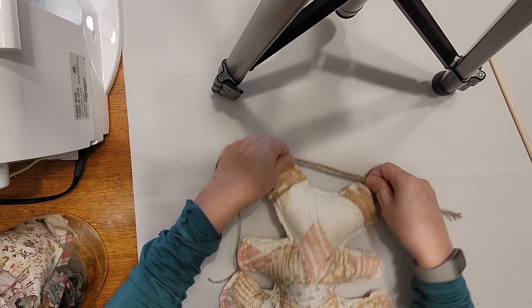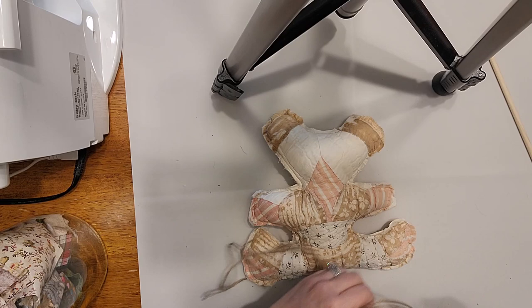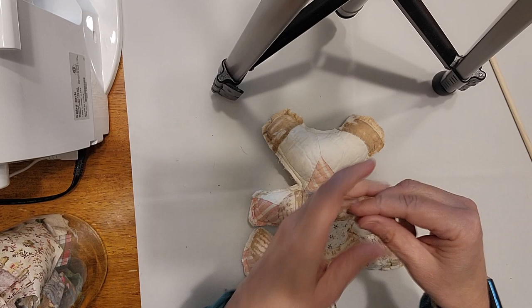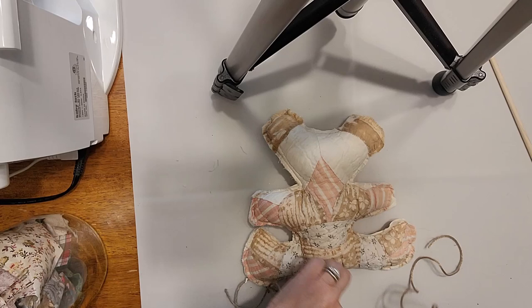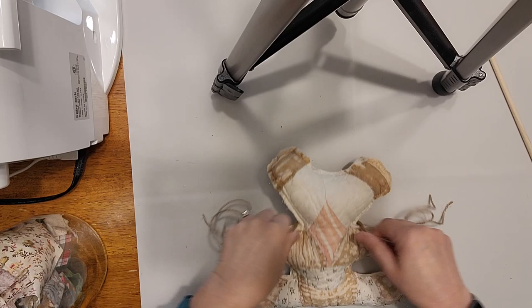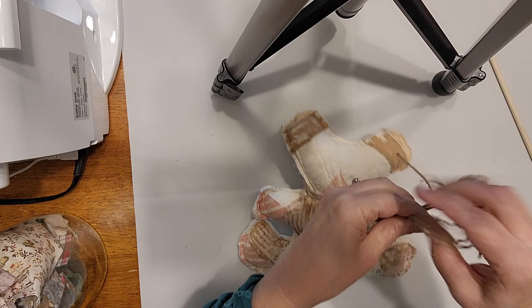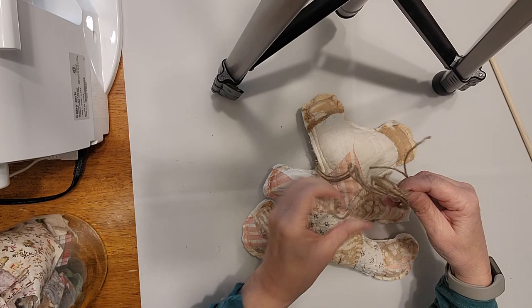Okay so I've cut three sections of twine that I happen to have, about 24 inches long for this little guy, and then we're just going to tie a simple knot around this little fellow's neck.